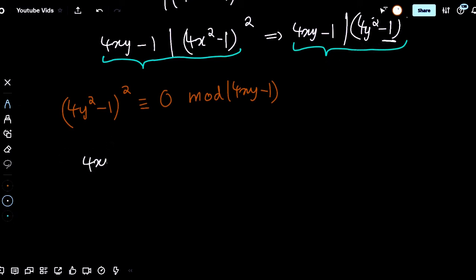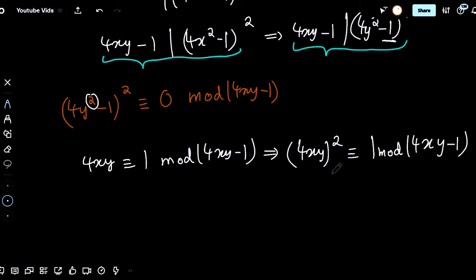Notice that 4xy is congruent to 1 mod 4xy minus 1. That is because it's greater than 4xy minus 1 by 1. But, we have 4y squared here. So, if we could have a y squared here as well, that would work. So, let's square both sides. We would then have 4xy whole squared is congruent to 1 mod 4xy minus 1.